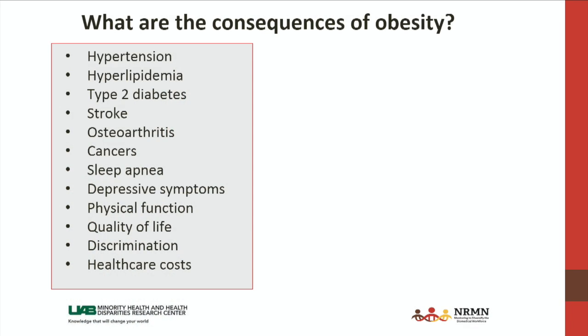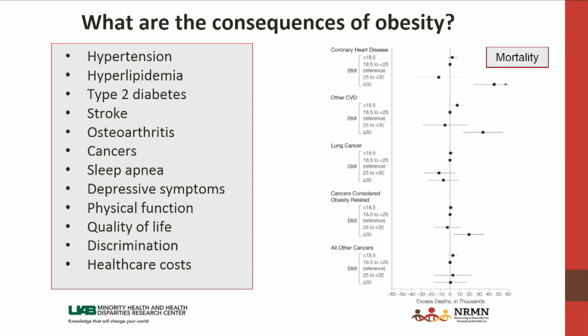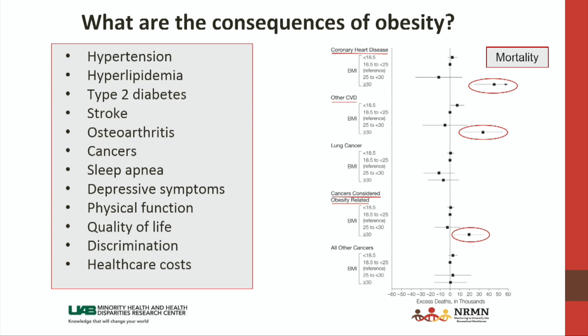There are certainly healthcare costs — given all the health consequences of obesity, healthcare costs are much higher for those individuals. In addition to all of these consequences, there's also excess mortality or premature death associated with obesity. For those with a BMI greater than 30, the risk of premature death is significantly higher compared to those of lower weight status, for specific health conditions like coronary heart disease, other types of cardiovascular disease, and certain types of cancer. This is certainly a condition that needs treatment for most people.